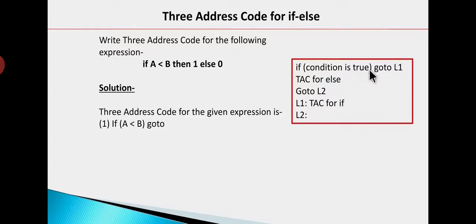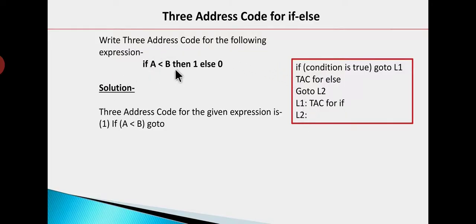If the condition is true, we jump to n1. At n1, we write the three address code for the if block. When the three address code for the else portion is complete, we jump to n2, and n2 represents the statement that is outside the if-else block. So for example: if a less than b, then t equals 1, else t equals 0. This is our statement and we need to write the three address code for it.